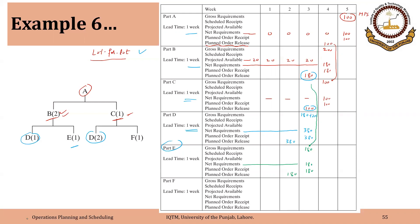Component F is a component of C. One F is required for one C, so the gross requirement is 100. The gross requirement of each component comes from the planned order release of its parent. With net requirements of 100, planned order receipt is 100 and planned order release is 100. This was a simple example to illustrate how we can calculate the demand of components and corresponding planned order releases, once we are given the product structure or bill of material.